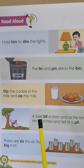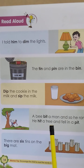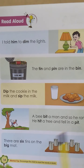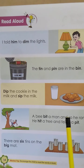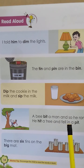A bee bit a man and so he ran. He hit a tree and fell in a pit. A bee bit a man and so he ran. He hit a tree and fell in a pit. Now let's read the next sentence.